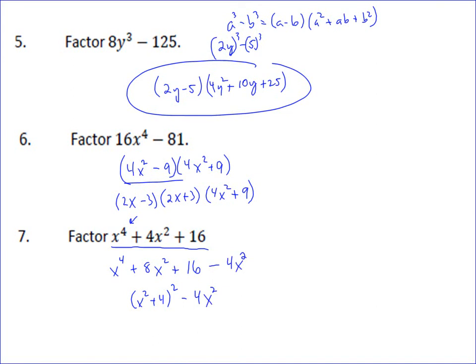Now, the reason that was good is because x squared plus 4 squared is a perfect square, and so is negative 4x squared. And so when you factor this, you can do the difference of two squares. x squared plus 4 minus, well, the square root of 4x squared is 2x, and x squared plus 4 plus 2x. And so the factorization of this problem is x squared plus 4 minus 2x, x squared plus 4 plus 2x.